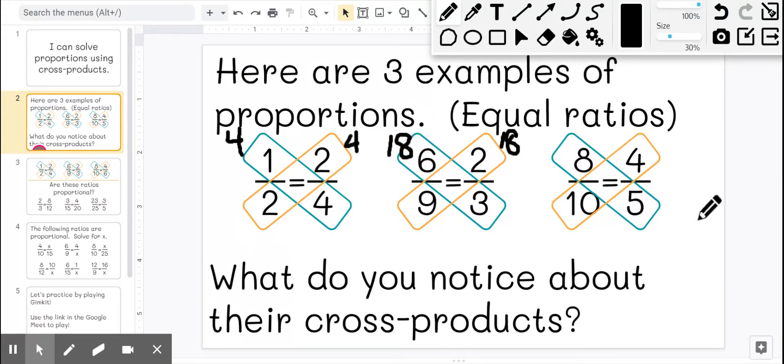8 times 5 is 40. 4 times 10 is 40. So two ratios are equivalent and make a proportion if their cross products are the same.